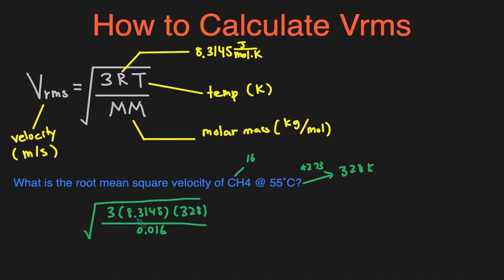we just take the square root of this. Plug that into your calculator and you should get 708 meters per second. And that's the root mean squared velocity of CH4.